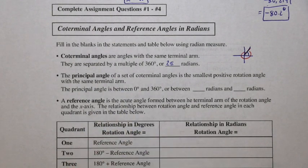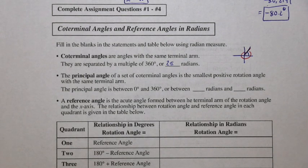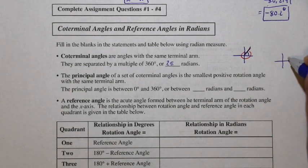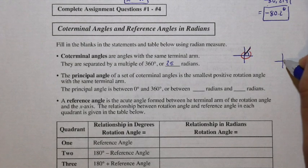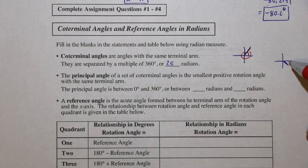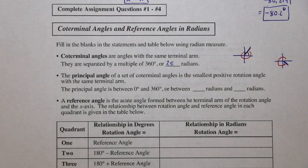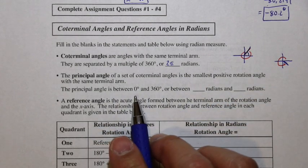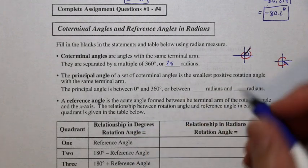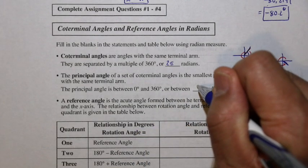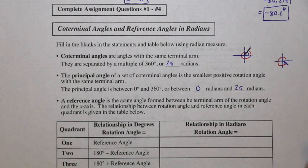A principal angle of a set of coterminal angles is the smallest positive rotation angle with the same terminal arm. You may have an angle that's negative, but we want the smallest positive angle that reaches that same terminal arm. The principal angle is between 0 and 360 degrees, or in other words, between 0 radians and 2π radians.